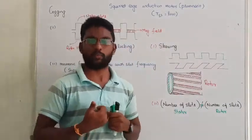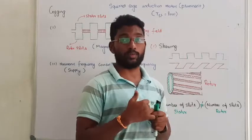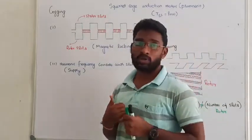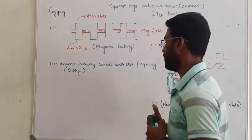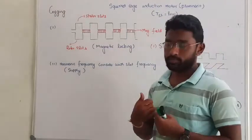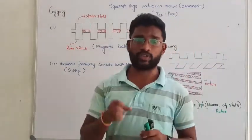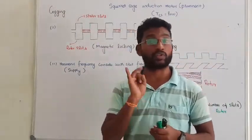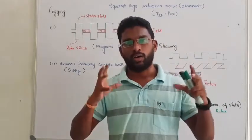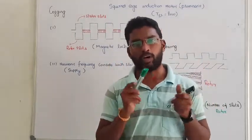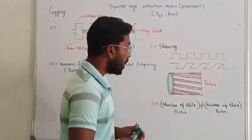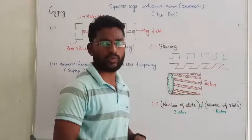The induction motor is designed with a stator and rotor. There are two types of classifications with respect to the rotor: the slip ring induction motor and the squirrel cage induction motor. In the squirrel cage induction motor, the rotor is made of copper bars, and the copper bars are connected by a short circuit ring.